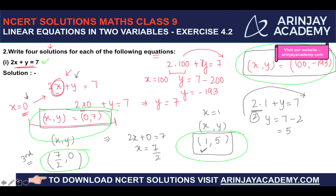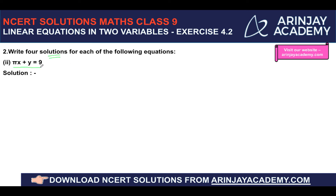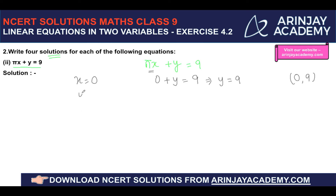Moving to the next equation, πx plus y equals 9. Taking x equal to 0: π into 0 plus y equals 9, so y equals 9. First solution: (0, 9). Now taking y equal to 0: πx equals 9, so x equals 9 upon π. Second solution: (9/π, 0).